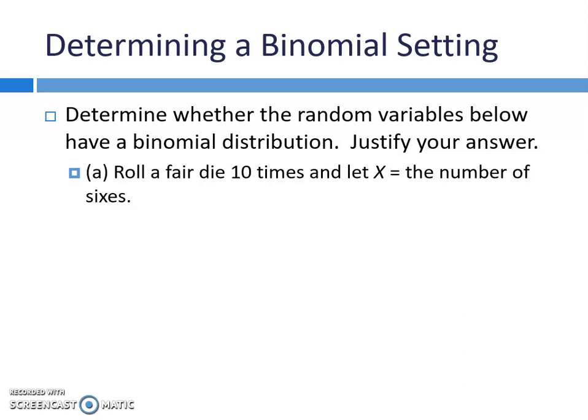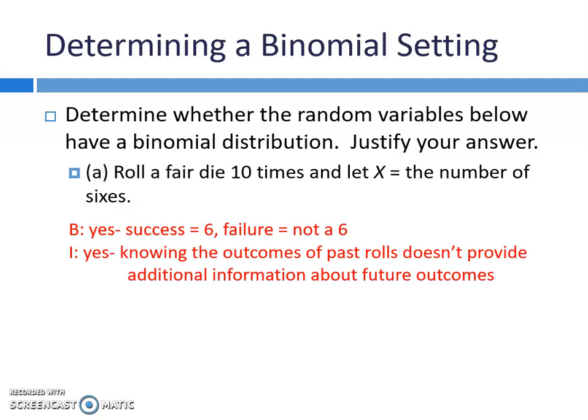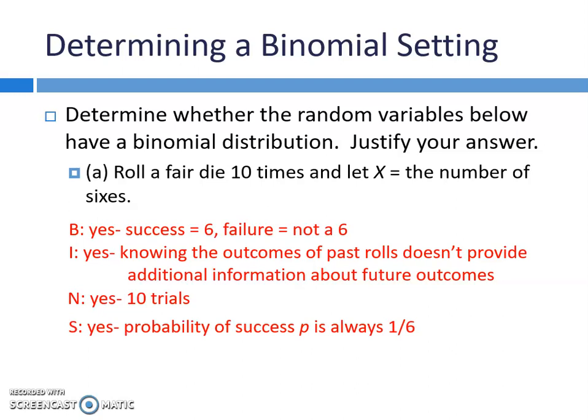Let's go through and see if we can determine if something is a binomial setting. Will the random variables have a binomial distribution? You have to go through BINS. First example: roll a fair die 10 times and let X be the number of 6s. B — is it binary? Yes. A success would be getting a 6; a failure would be getting not a 6. I — is it independent? Yes, knowing the outcomes of past rolls doesn't provide additional information about future outcomes. N — are we doing this for a set number of trials? Yes, 10 times. S — does the probability of success stay the same for each trial? Yes, it is always 1/6. Therefore, this is a binomial setting where n = 10 and p = 1/6.